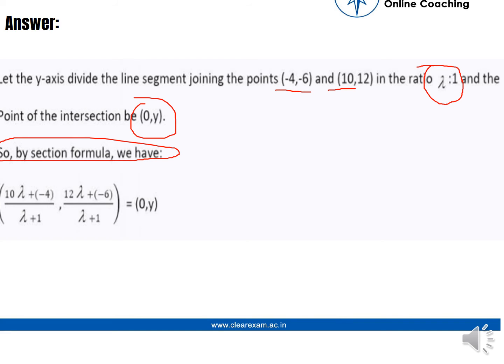We can say x2 lambda minus x1 divided by lambda plus 1, y2 minus y1 divided by lambda, and that is equal to our coordinates.